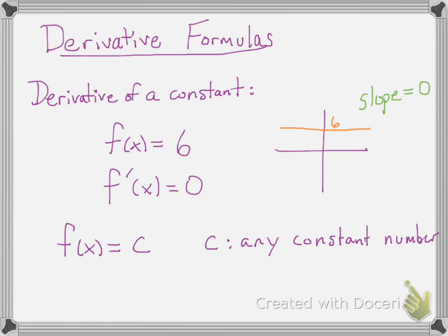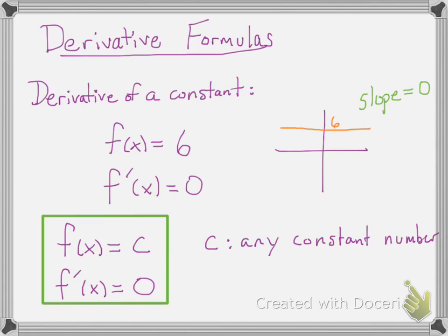So that's our first rule. If you have any constant function — so f of x equals c for any number c — then the derivative is zero because the slope is zero.